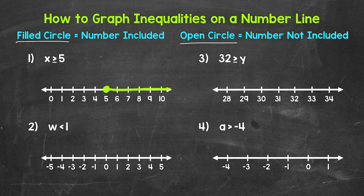So we need an arrow pointing to the right. And now our inequality, x is greater than or equal to 5, is graphed on the number line. The filled circle shows we are including 5, and then the arrow represents all of the numbers greater than 5. These are our solutions.